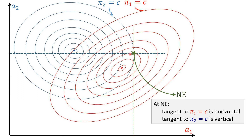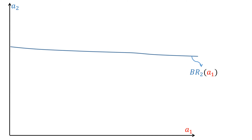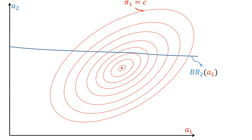At the Nash equilibrium point, the payoff of Agent 1 is horizontal and the payoff of Agent 2 is vertical. Since Agent 2 is a follower in this Stackelberg game, we know that Agent 2 will always play its best response. So let's go ahead and draw the best response curve of Agent 2. Agent 1, who is the leader, will always try to maximize its payoff. Agent 1 knows Agent 2's best response curve, and we shall utilize these contours of equal payoffs of Agent 1 and this best response curve of Agent 2 to locate where Agent 1 has its highest payoff.